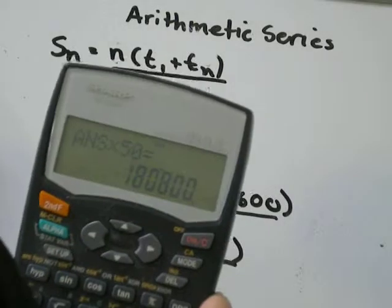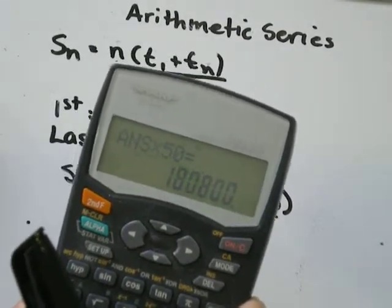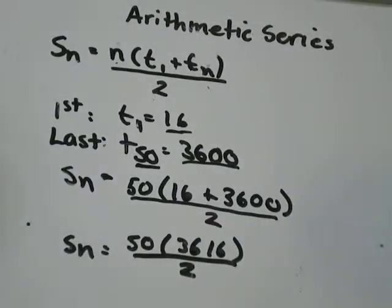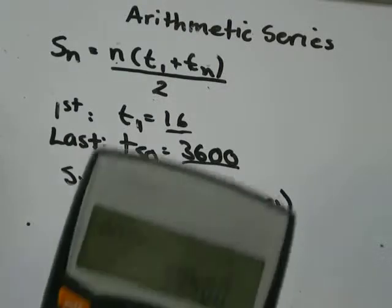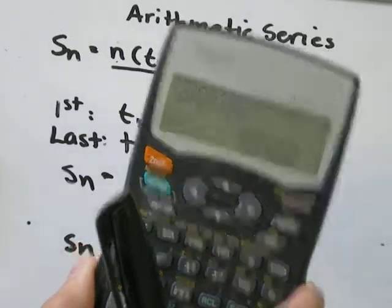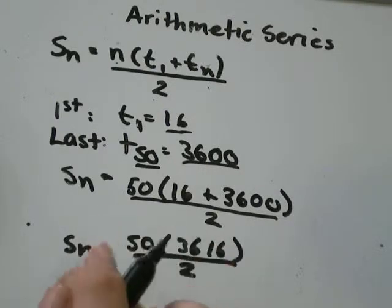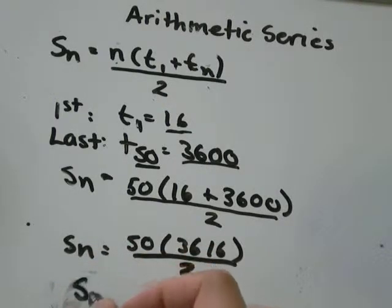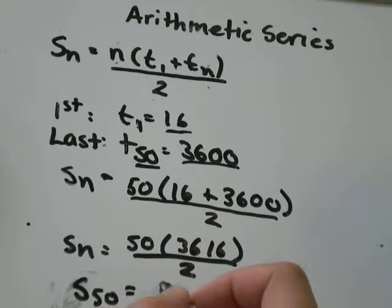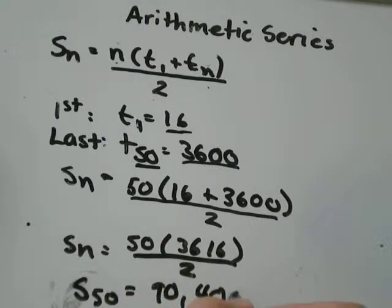and I get that's equal to 180,800. And I'm just going to divide all that by 2, and I get 90,400. So the sum of the 50 terms is equal to 90,400.